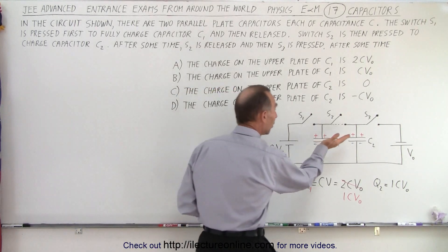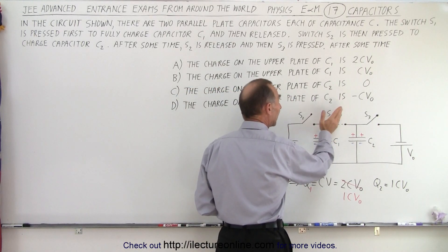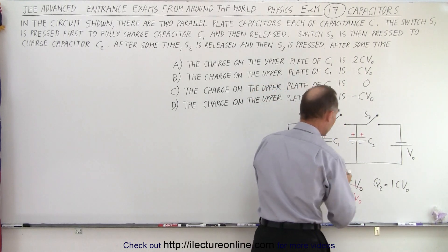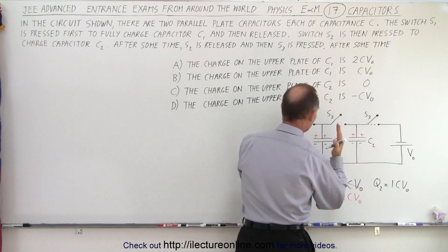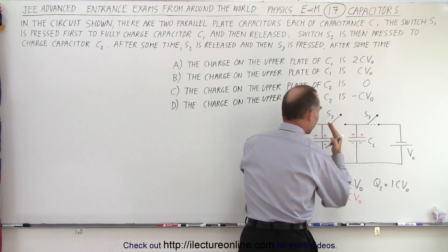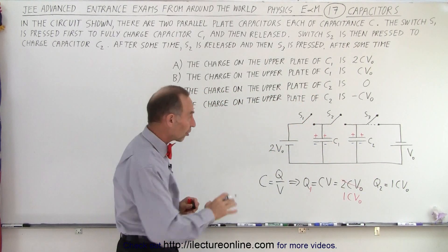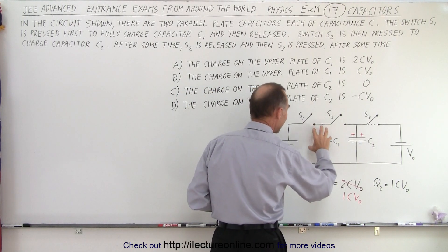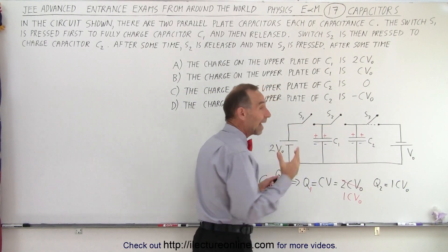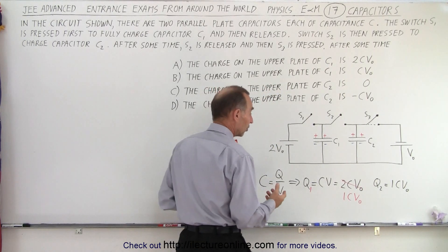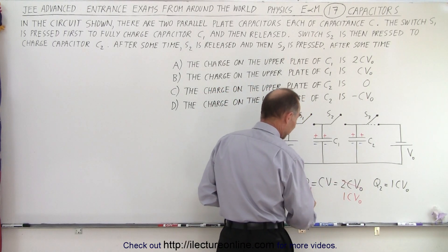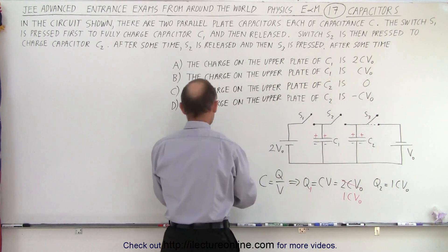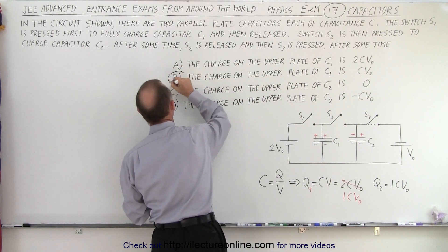Now when this switch opens up, notice that completely isolates capacitor C1. No charge movement can happen after that because there's no complete circuit, which means that C1 stays in this condition. Now we could potentially answer this question because now we realize that Q1 is now 1CV₀, which is answer B. So answer B is now correct.